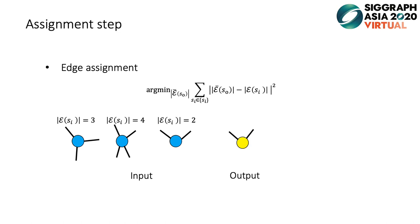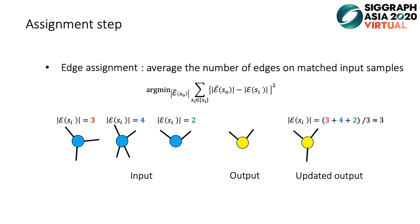The edge assignment includes several steps. First, we compute the expected number of edges associated with each output sample. Here, the yellow output sample is matched with three input samples extracted from overlapping neighborhoods. The three input samples have three, four, and two edges connected to them, respectively. The updated output sample should be associated with three edges by averaging the numbers of matched input samples.